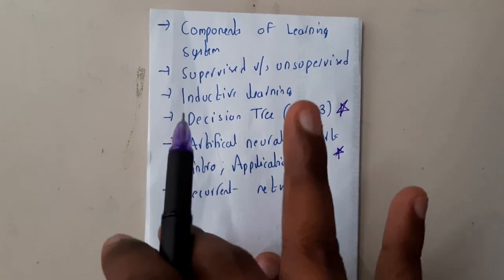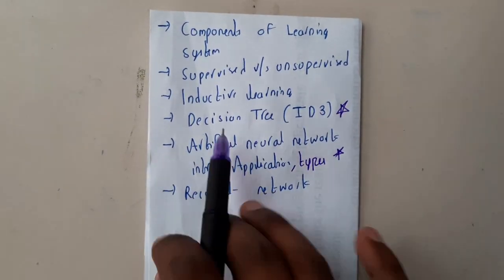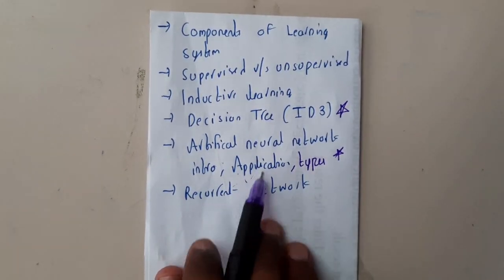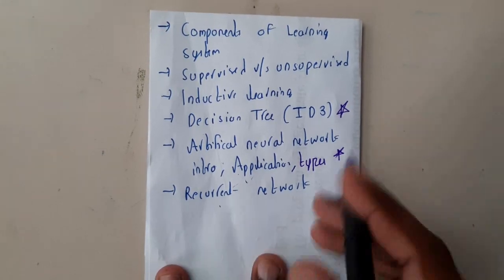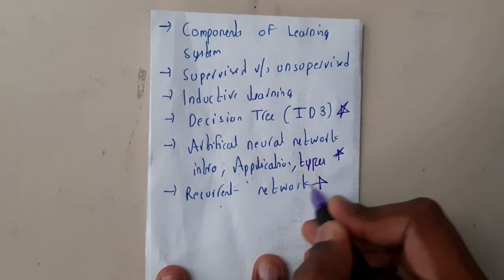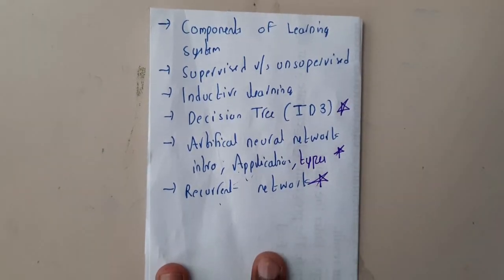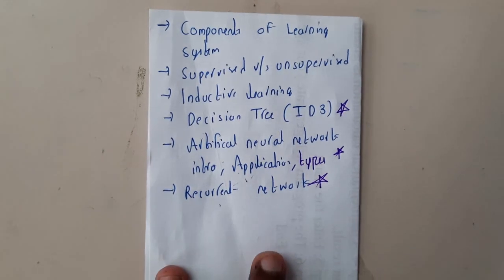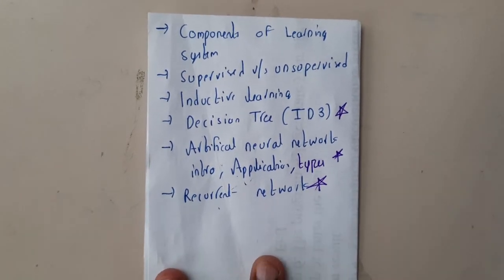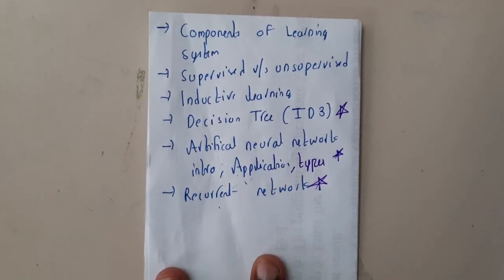The types of artificial neural networks and recurrent networks — even recurrent networks should be perfect, guys. I hope everyone got a clear idea. Let us meet in the next tutorial. Thank you, thanks for watching.